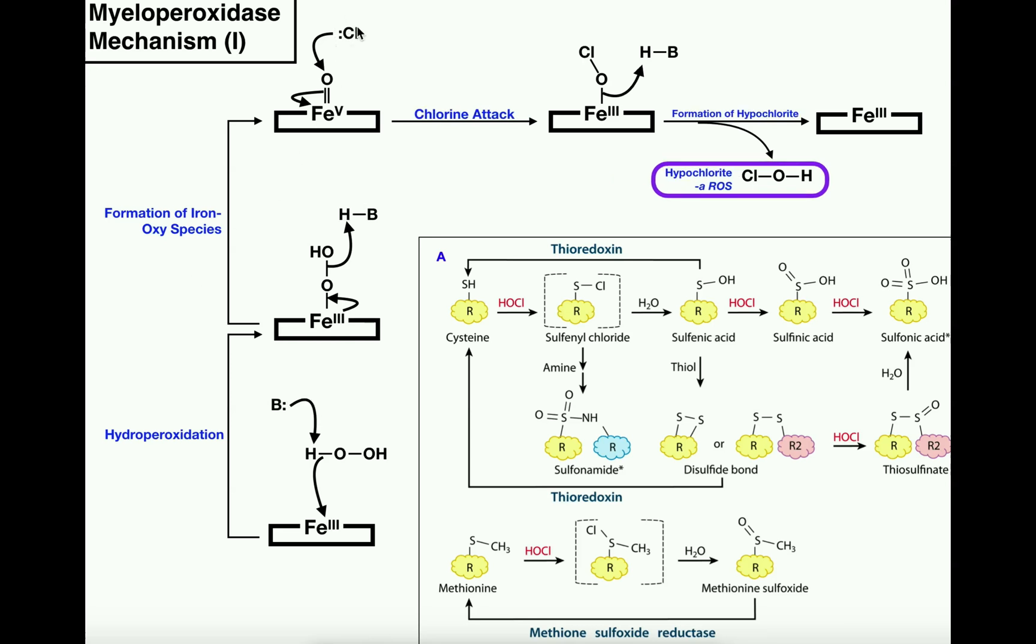But now instead of chlorine attacking right here we're going to have thiocyanate attack. Thiocyanate is a molecule with a sulfur and a carbon nitrogen triple bond. You can look up the chemical structure online but thiocyanate, the sulfur that is, is actually going to attack this oxygen in the same way that the chloride did.